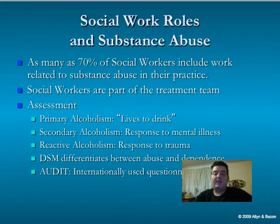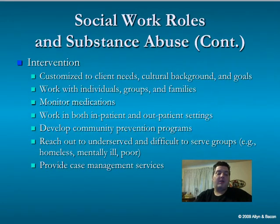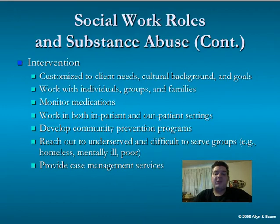The DSM Diagnostic and Statistical Manual differentiates between abuse and dependence. Alcohol abuse is any one out of five categories, and dependence is three out of seven. The AUDIT is an internationally used questionnaire — an audit form that helps a social worker evaluate if someone has a serious alcohol or drug abuse issue.